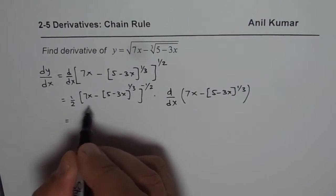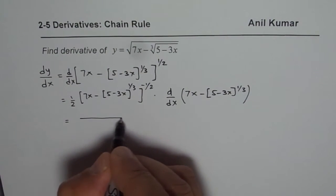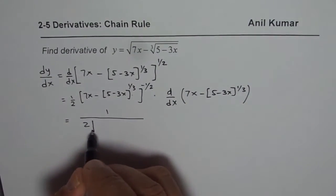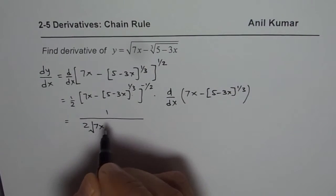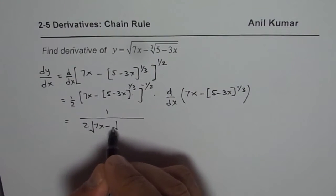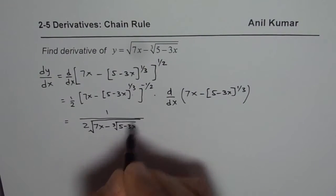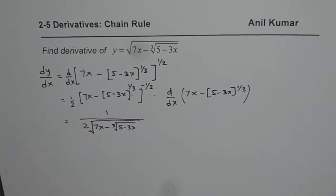So the first part, we could write this as 1 over 2 times this whole function. This is what we have written here. It is good to convert it back to the radical form. So we have cube root of 5 minus 3x. That is the strategy. You should always do this.